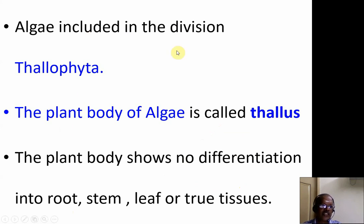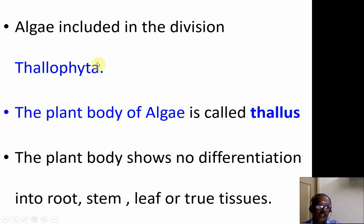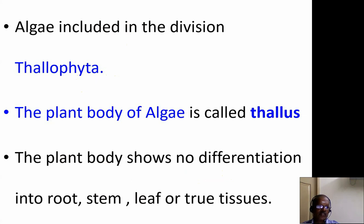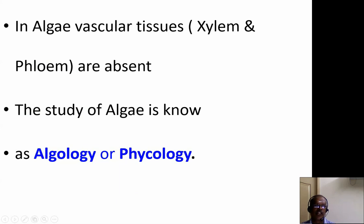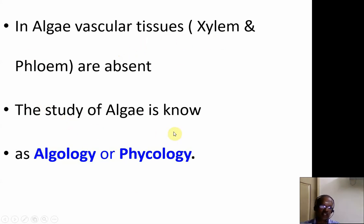Algae are included in the division Thallophyta because the plant body of algae is called thallus. The plant body of algae does not show differentiation into root, stem, leaf, or root tissues. Algae also do not have vascular tissues — that is, xylem and phloem. Xylem conducts water and phloem conducts food material. The study of algae is known as algology or phycology.